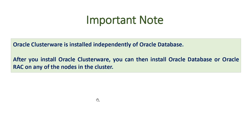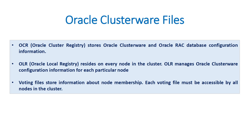An important note: Oracle Clusterware is installed independently of Oracle Database. After you install Oracle Clusterware, you can then install Oracle Database software. You must install the clusterware software first and then install the database software. Oracle Clusterware files include OCR (Oracle Cluster Registry), OLR (Oracle Local Registry), and voting files. The Oracle Cluster Registry stores clusterware and database configuration information. OLR is local on every node. Voting files are about node membership and must be accessible by all nodes in the cluster.